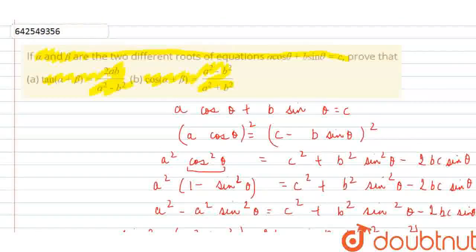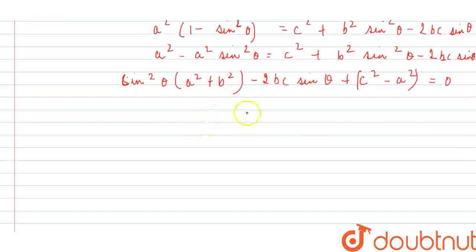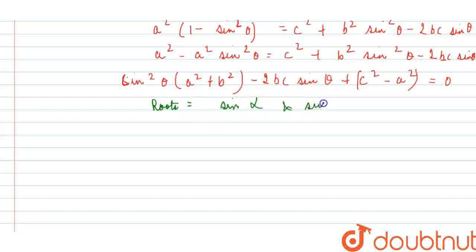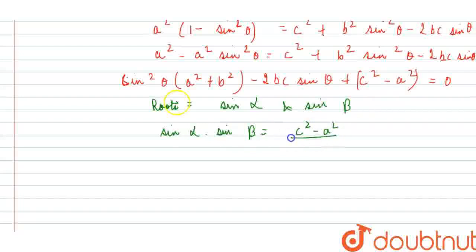Since alpha and beta are roots of the original equation, the roots of this quadratic are sinα and sinβ. The product of roots gives sinα·sinβ = (c²−a²)/(a²+b²). Let this be equation number 1.